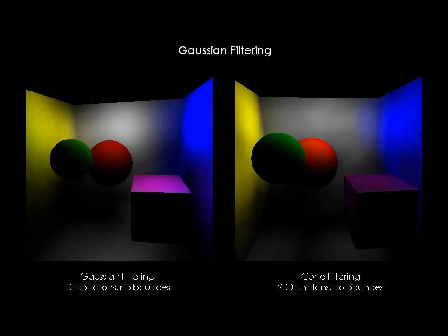Filtering is used to improve the results of radiance estimates, giving more weight to the photons that are closer to the target location. Gaussian filtering is chosen for its smooth blended results. It has a gradual drop-off instead of the hard cut-off of cone filtering. When compared, Gaussian filtering produces much nicer results with many fewer photons.